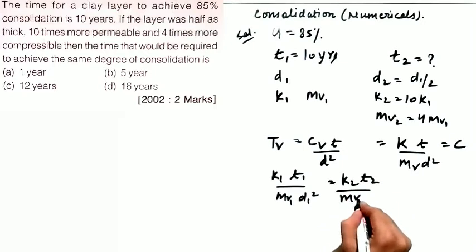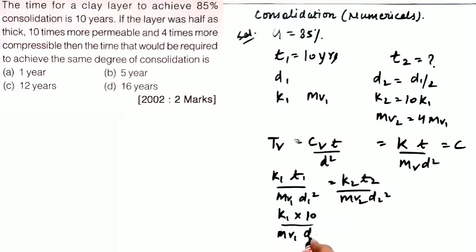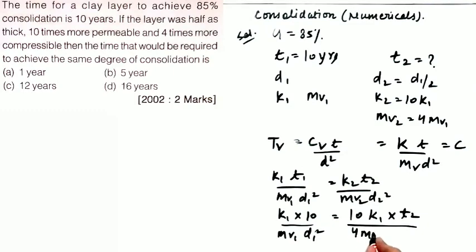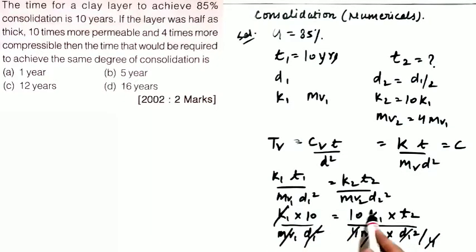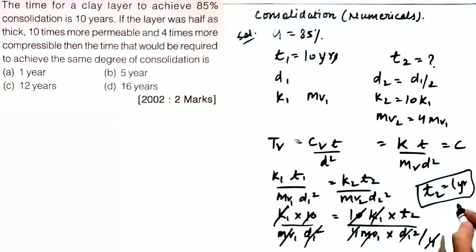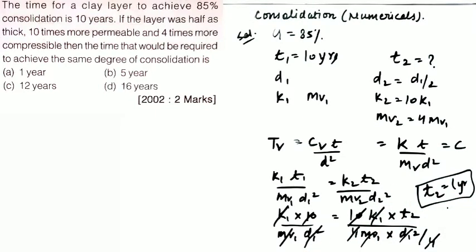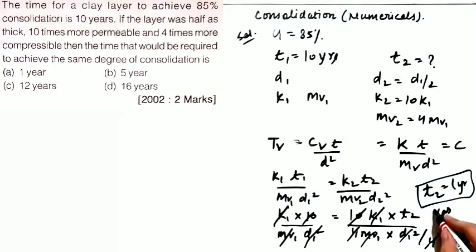So we write: k1·t1 divided by mv1·d1² equals k2·t2 divided by mv2·d2². Now we substitute: t1 is 10 years, k2 is 10·k1, mv2 is 4·mv1, and d2² equals d1²/4. The 4 cancels with the 4, mv1·d1² cancels, and k1 cancels with k1, and 10 cancels with 10. We get t2 equal to 1 year. So 85% consolidation will be achieved in 1 year instead of 10 years. The correct option is A.